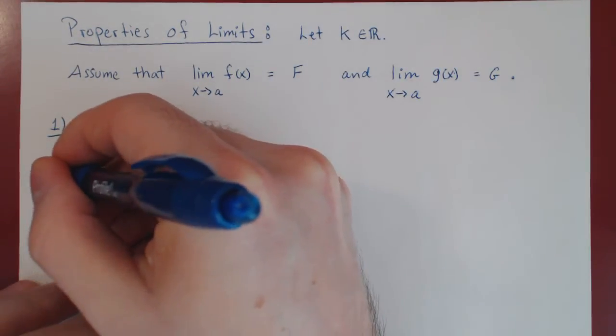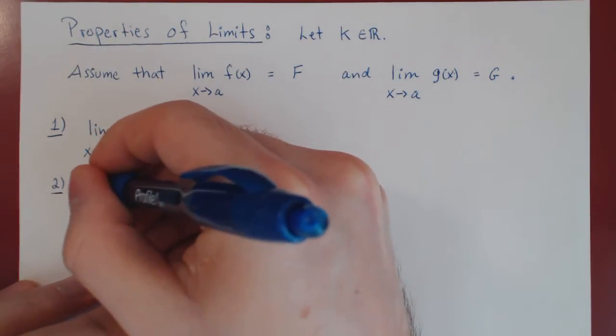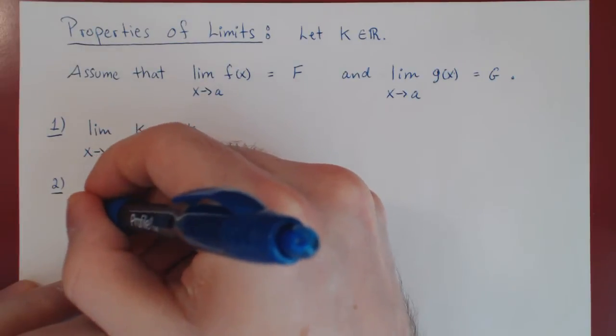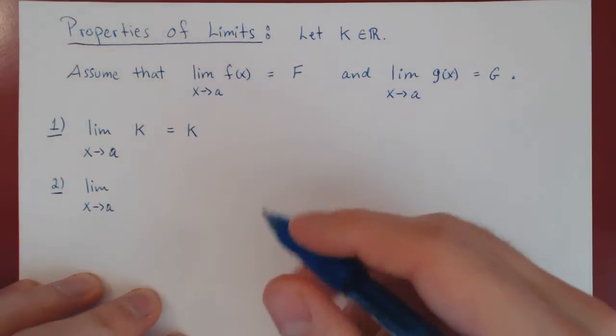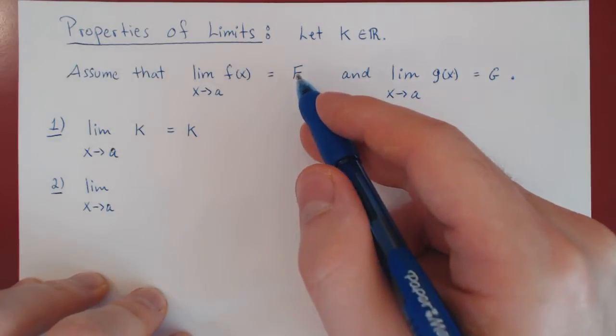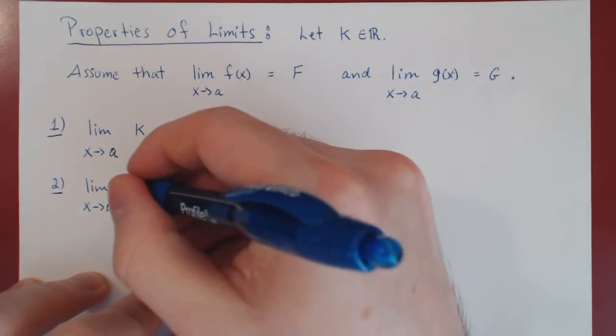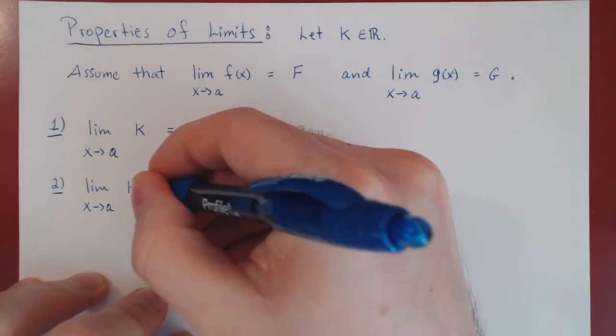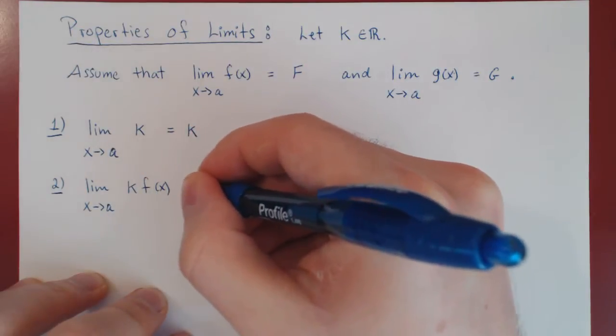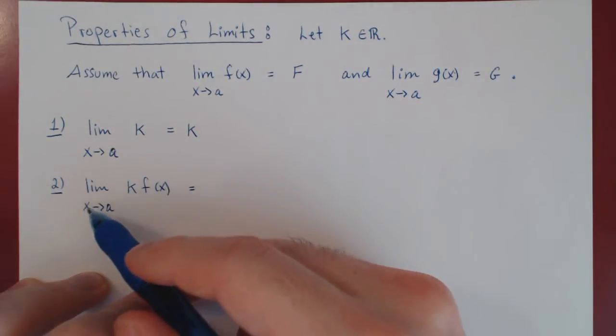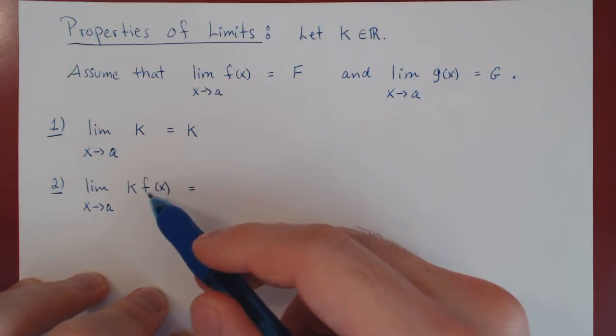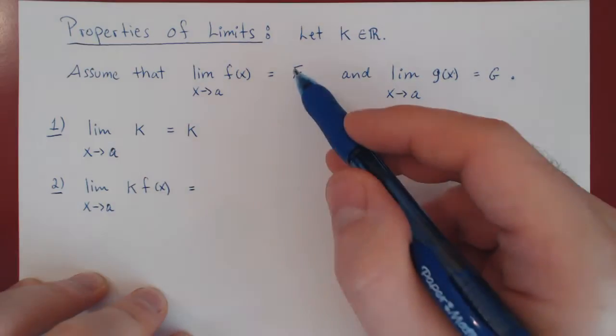Property two. If we know that f of x approaches uppercase F as x approaches a, what about k times f of x?